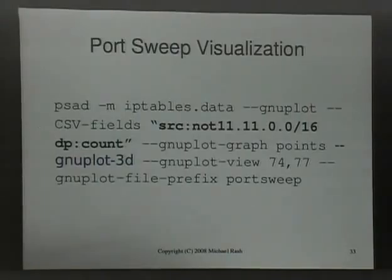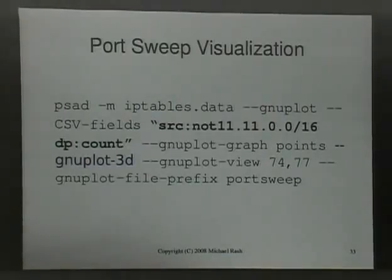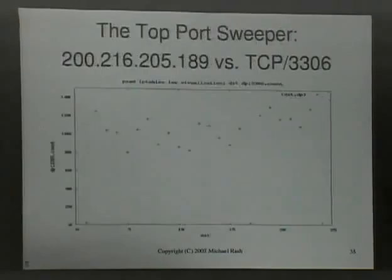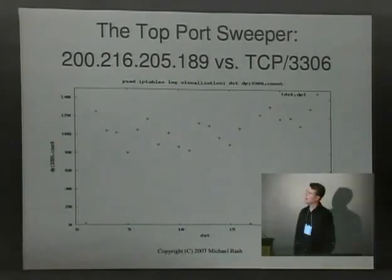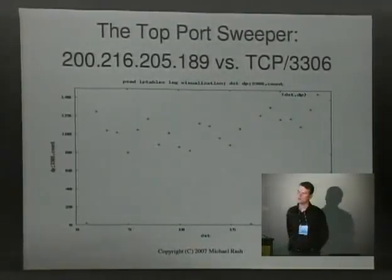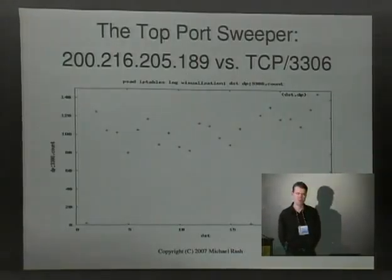PSAD can parse that log information and interface with GNUplot. Out of all that 39 megabytes of data, we can graph the top port sweeper — looking for external sources targeting HoneyNet addresses at 11.11/16 — and graph in three dimensions the destination port versus the count. There's one very nice outlier in the top left, and mapping that back to an IP address, 200.216.205.189 was the top port sweeper in that data set, sweeping for destination port 3306, which is commonly used for MySQL communications.